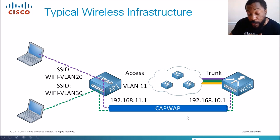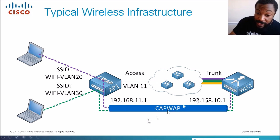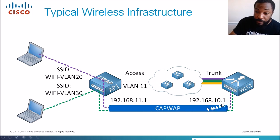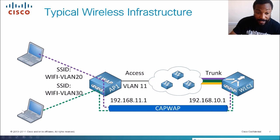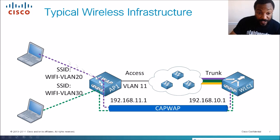If we have FlexConnect enabled and the wireless controller goes down, VLAN 20 can still talk to VLAN 30 locally. Normally traffic goes from the lightweight access point to the wireless controller and back, but if the controller goes down, FlexConnect allows the access point to locally switch traffic — so VLAN 20 can talk to VLAN 30 without going through the controller.